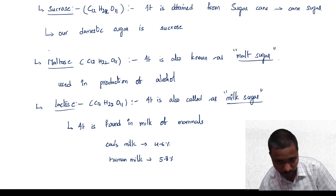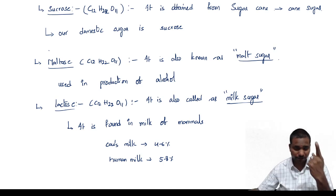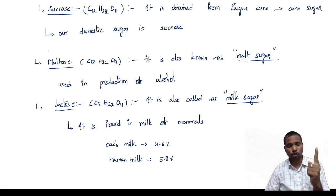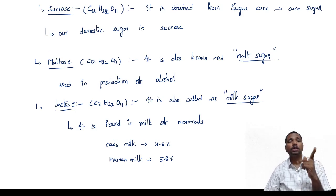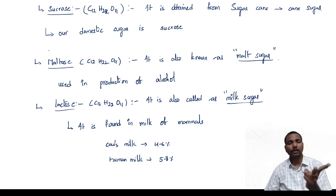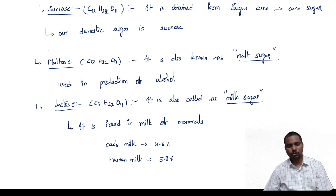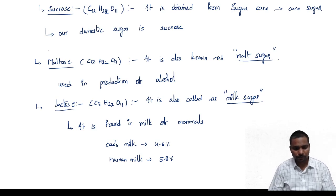Note: three questions are very important here. First, which is called blood sugar — that is glucose. Second, which is called fruit sugar — that is fructose. Third, which is called milk sugar — that is lactose.